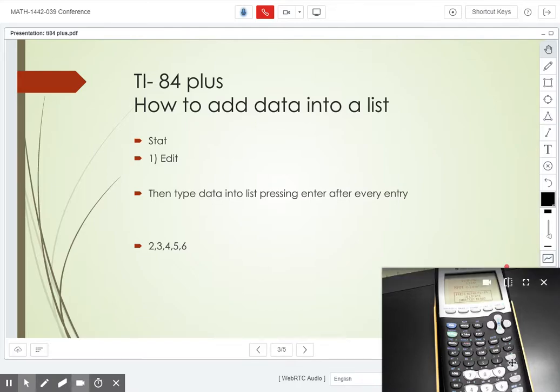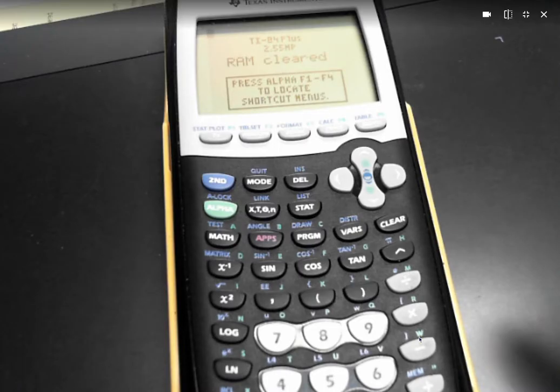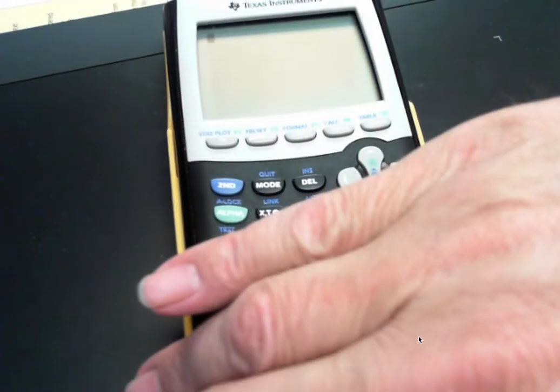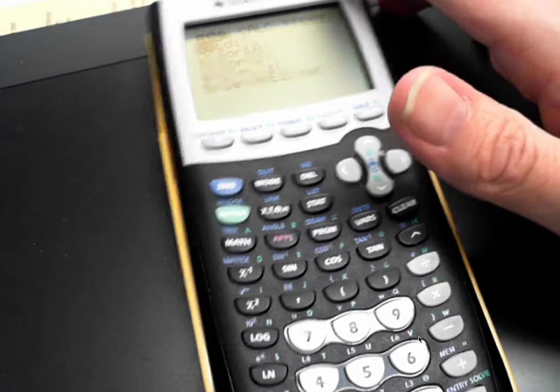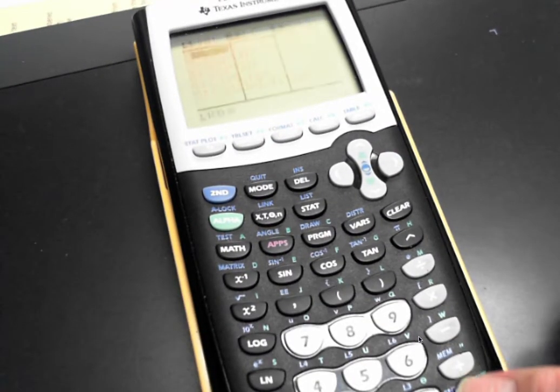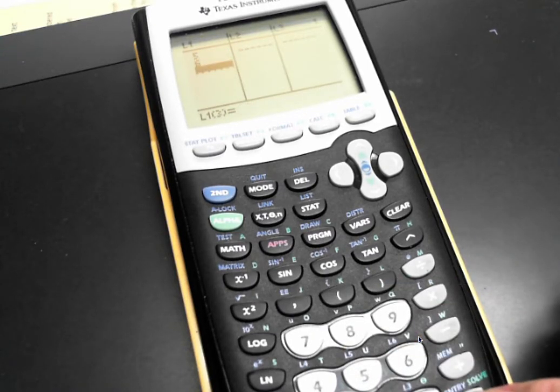So let me show you. You go to STAT, number one, edit, and there's list one. Whatever data you have, type it in, let's say the number 12,